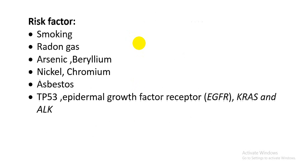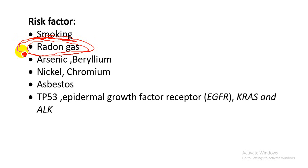Now let's talk about the risk factors associated with squamous cell carcinoma of the lung. The first one is smoking, which is highly associated with squamous cell cancer. Another important risk factor is radon gas. Other risk factors include arsenic, beryllium, nickel, chromium, and asbestos — asbestos also causes mesothelioma. Gene mutations associated with squamous cell carcinoma include TP-53 gene mutation, epidermal growth factor receptor mutation, KRAS mutation, and ALK mutation.